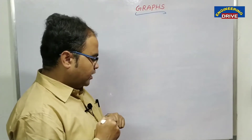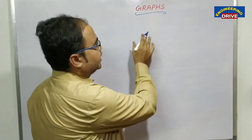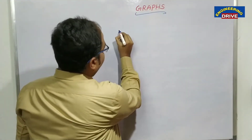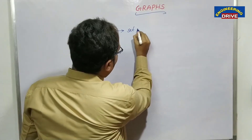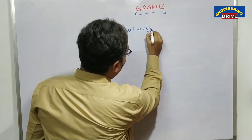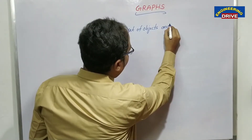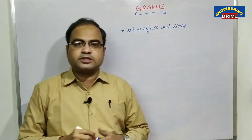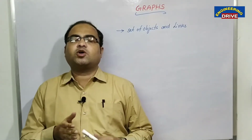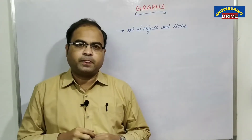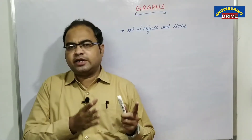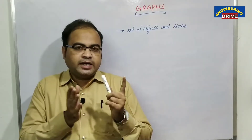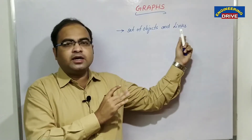First of all, let us concentrate on the definition of what is a graph in data structures. A graph is nothing but a set of objects and links. What is a graph? A graph is a combination of objects and links. You know the definition of a tree — a tree is a combination of nodes and links. Here we are talking about objects and links.